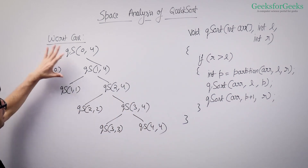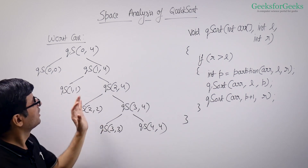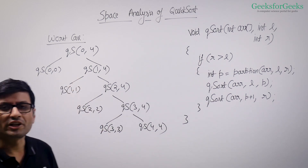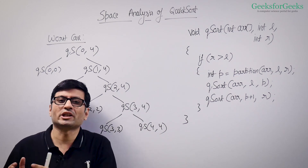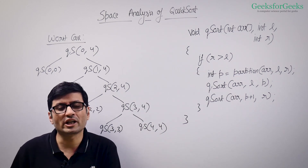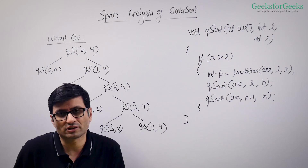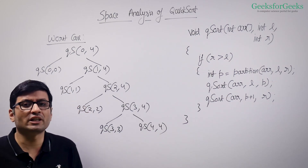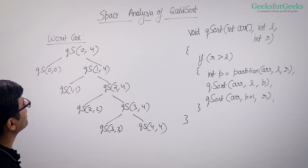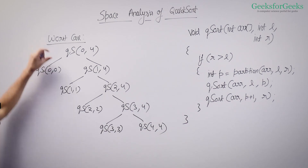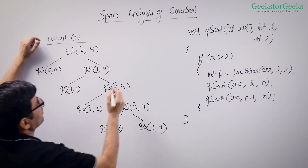Let us see how much space quicksort requires for the recursion call stack. I have drawn a recursion tree for the worst case. In the worst case, similar to time complexity analysis, you have one element on one side and n minus one elements on the other side, and that keeps happening in every recursive call.